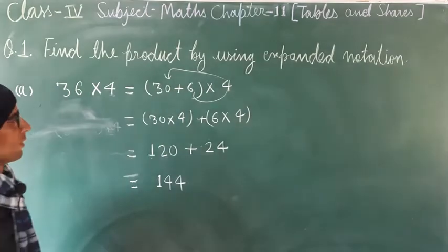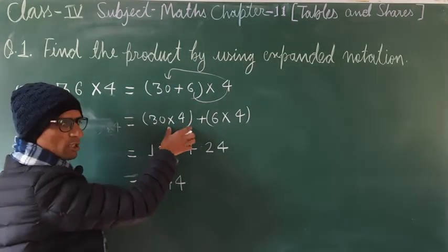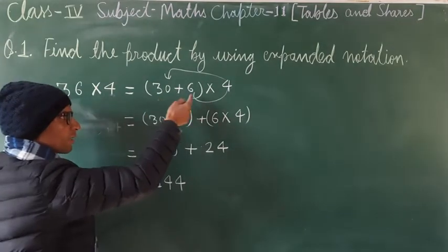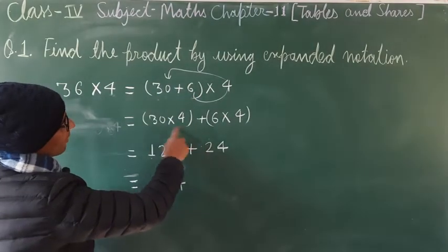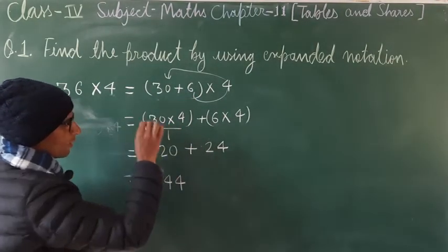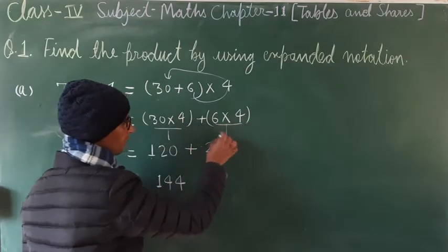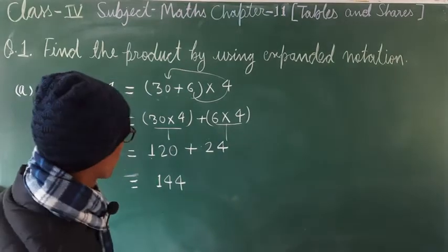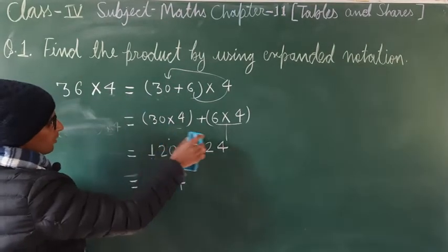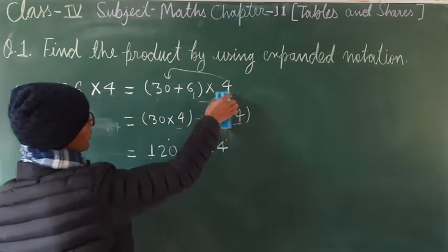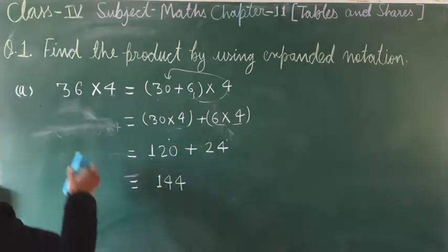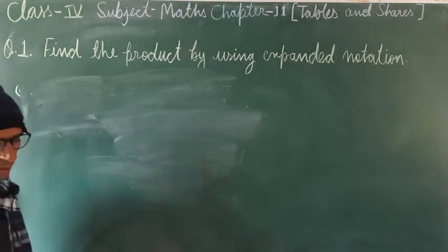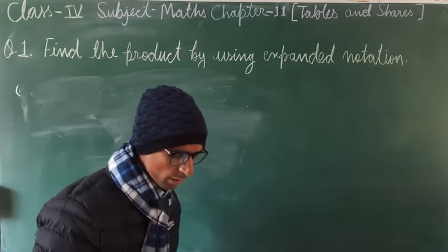We solved it step by step: first wrote in expanded notation, then multiplied each part individually — 30 × 4 and 6 × 4 — then added the results to get 144. This is the first part. Now the next part: 92 × 5.